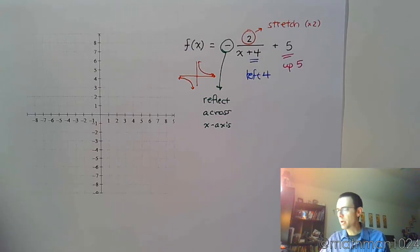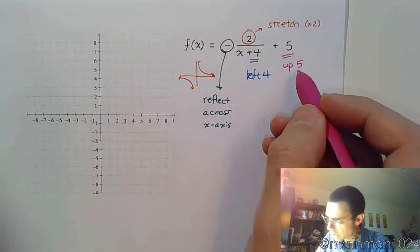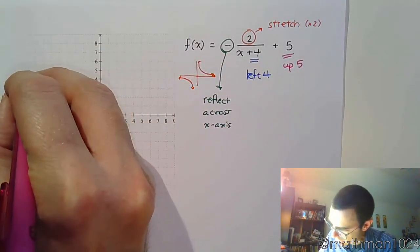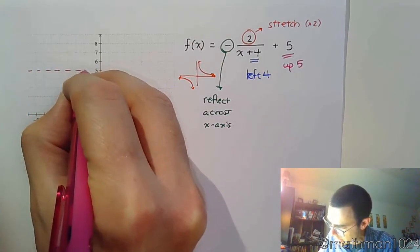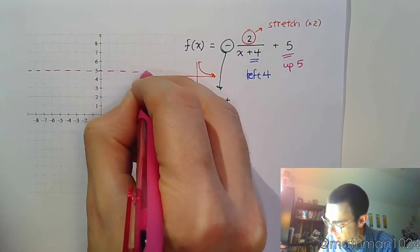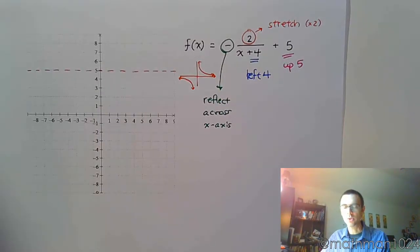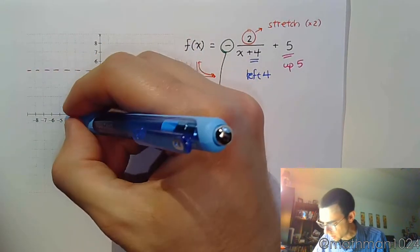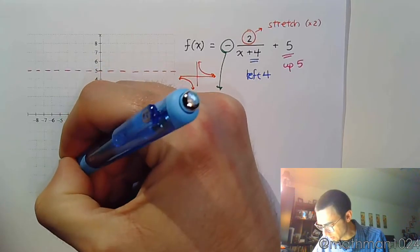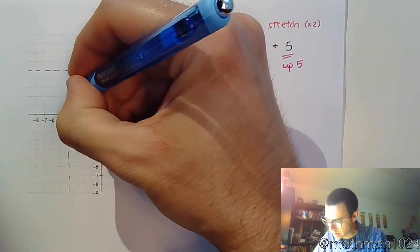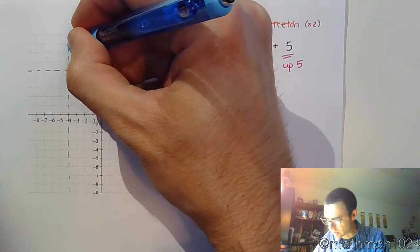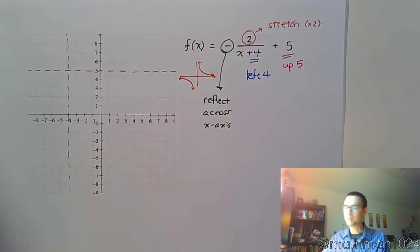So, as we've been doing, let's start by plotting the asymptotes, because that tells us how we're going to be moving things up, down, left, and right. So we're going up 5 units, so let me go ahead and dash out that new x-axis, which is going to match up with our horizontal asymptote. Went to the left 4, so this is going to be our new y-axis, or vertical asymptote.